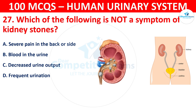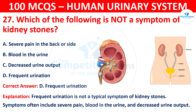The correct answer is D, that is frequent urination. Frequent urination is not a typical symptom of kidney stones. Symptoms often include severe pain, blood in the urine, and decreased urine output.